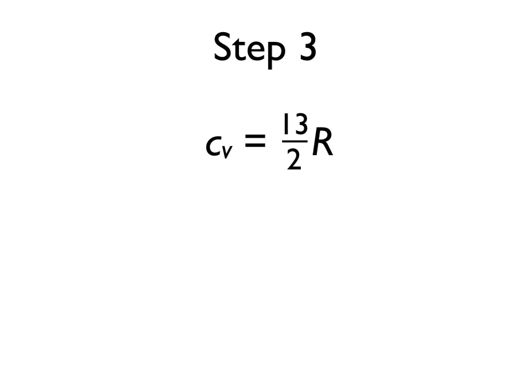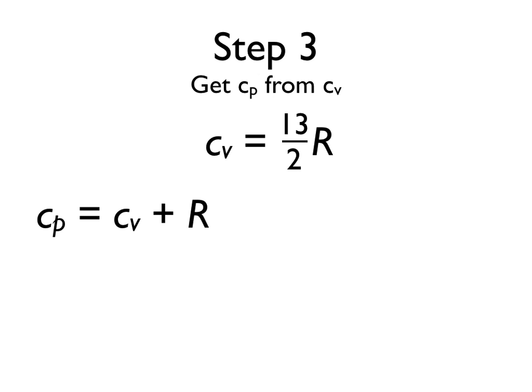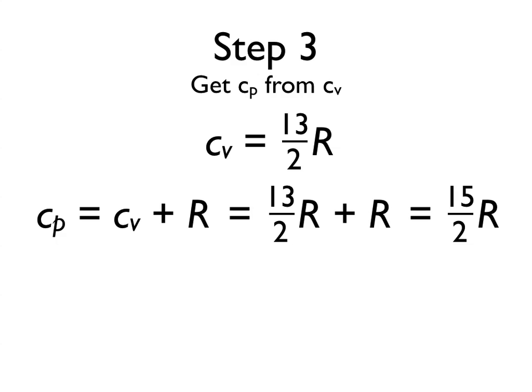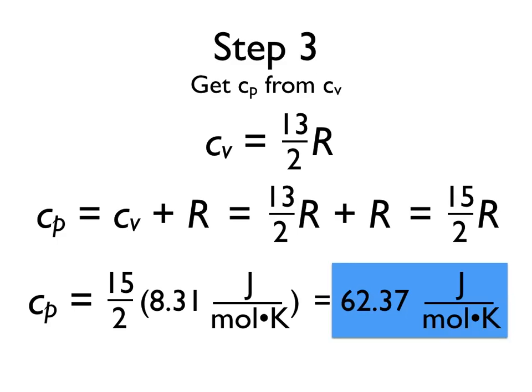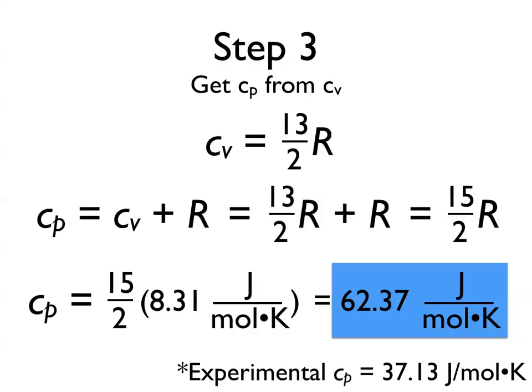We have Cv equals thirteen-halves R, but we're looking for Cp. These two are directly related: Cp is always larger than Cv because a system held at constant pressure can hold more energy for less change in temperature than one held at constant volume. So we take our thirteen-halves R and add one more R to get fifteen-halves R for Cp. Multiplying fifteen-halves by the ideal gas constant, 8.31 joules per mole·Kelvin, gives us 62.37 joules per mole·Kelvin. It's worth noting that experimentally, this value for CO2 is quite a bit lower at 37.13 joules per mole·Kelvin, but this is an approximation that tends to be more accurate for smaller atoms or molecules.